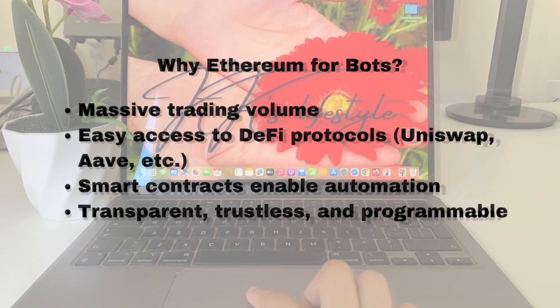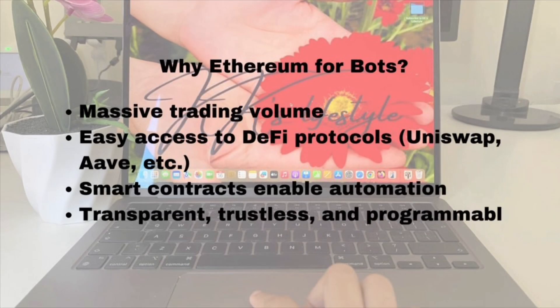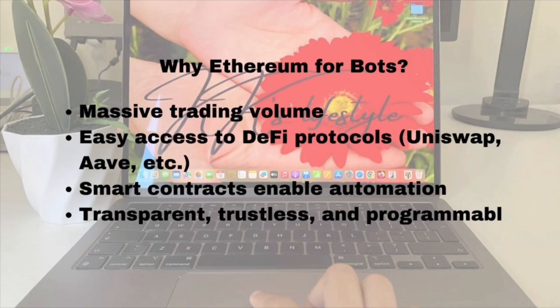So why is Ethereum ideal for using trading bots, especially when it comes to building passive income strategies? First, Ethereum has massive trading volume — it's one of the most actively traded cryptocurrencies in the world, which means there's always a high level of liquidity. In simple terms, you can enter and exit trades quickly without huge price fluctuations, a key factor when you're running a bot that depends on real-time trades. Second, Ethereum gives you easy access to decentralized finance, or DeFi. Platforms like Uniswap and Curve are built on Ethereum and offer open, programmable tools that bots can tap into — things like token swaps, lending, borrowing, and yield farming. This creates endless opportunities for automation that simply don't exist in traditional finance.